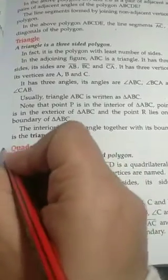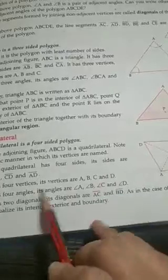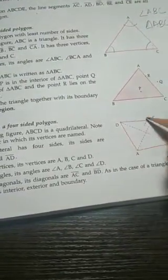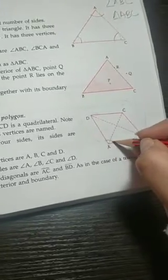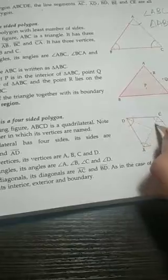Now let's come down to quadrilaterals. What does quad mean? Four. So it has four sides: AB, BC, CD, and DA. In the quadrilateral there are 4 sides, 4 vertices, and 4 angles — angle A, angle B, angle C, and angle D. We can also draw 2 diagonals by joining opposite vertices with dotted lines.